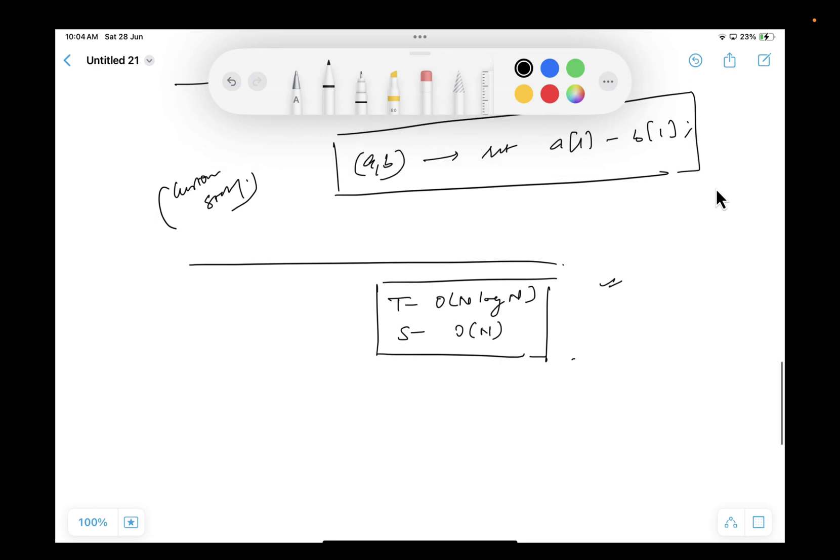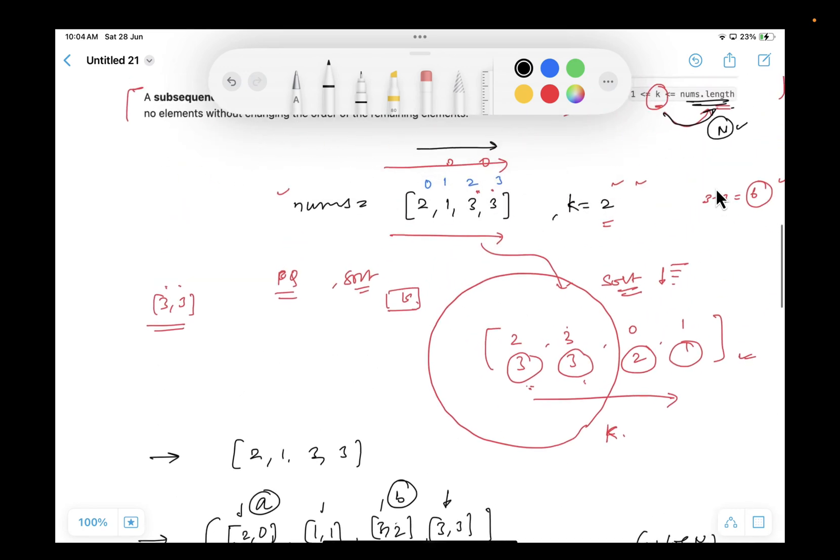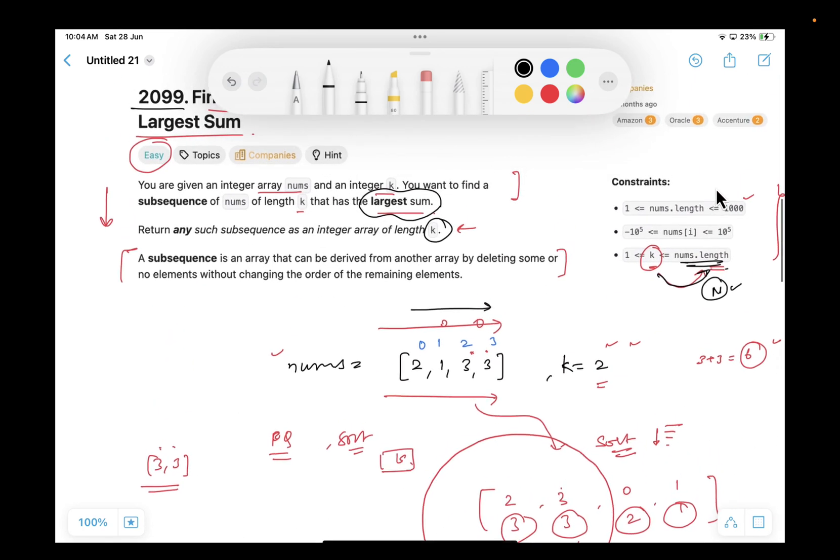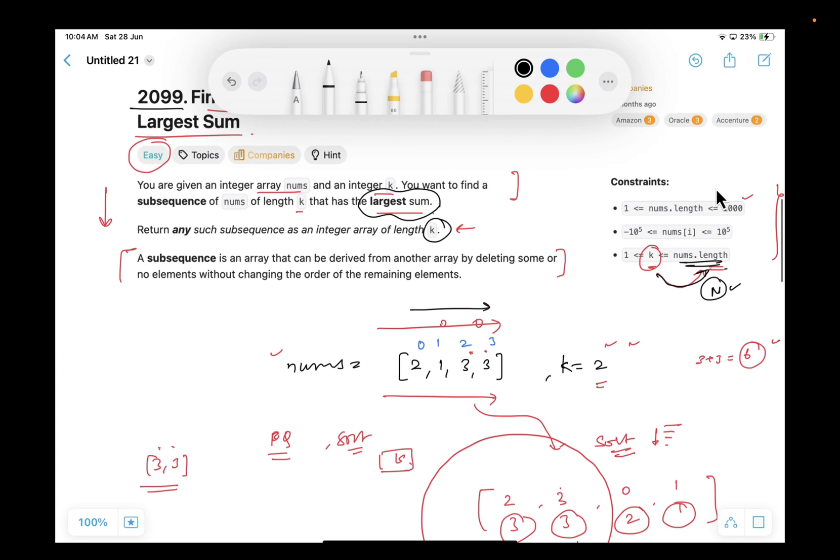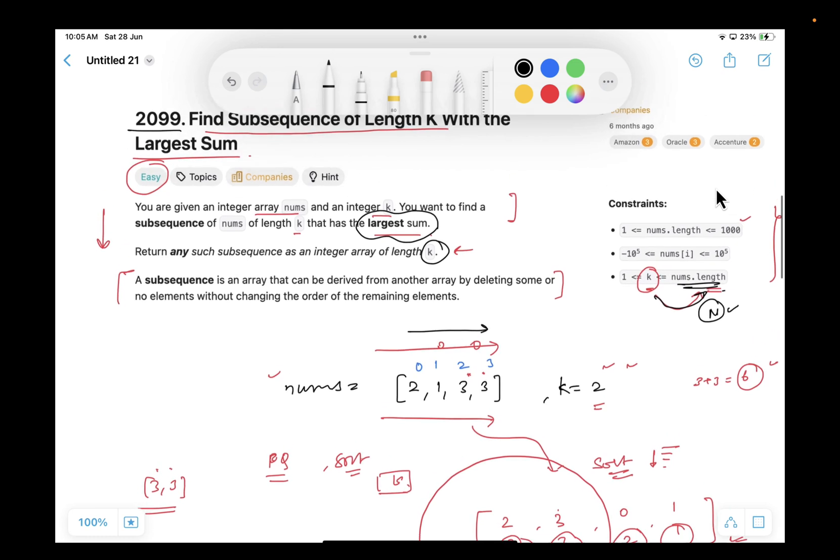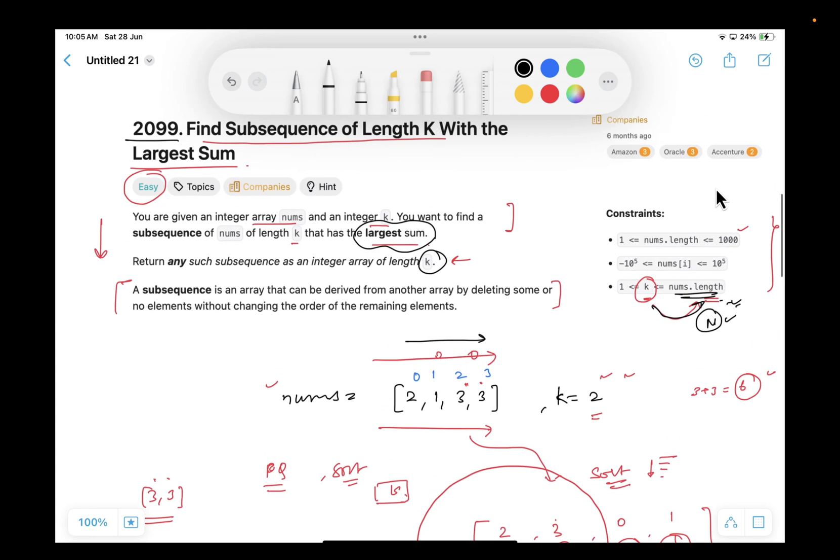Now you try to think of any better approach if you can see or if any approach can come to your mind. I think in this case it will also be N log N even if you are going ahead with the priority queue concept. But there might be one thing, like if the value of K is lesser than N. Let's say the value of K is 100.